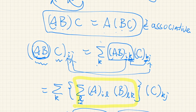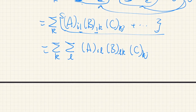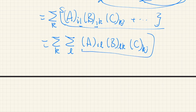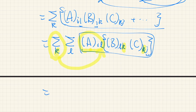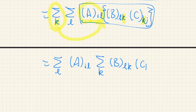Now let's look at the right-hand side. We first multiply B and C and then multiply A from the left. Because of the associativity of multiplication between real numbers, we can rearrange this. The index K appears only in the B_{LK} and C_{KJ} terms, not in A_{IL}, so we can bring the sum over K inside and factor out A_{IL}. The sum symbol comes in front of B_{LK} times C_{KJ}.